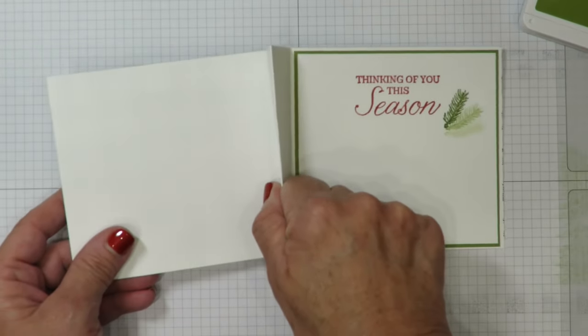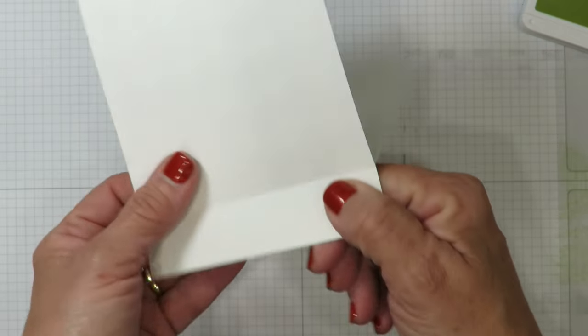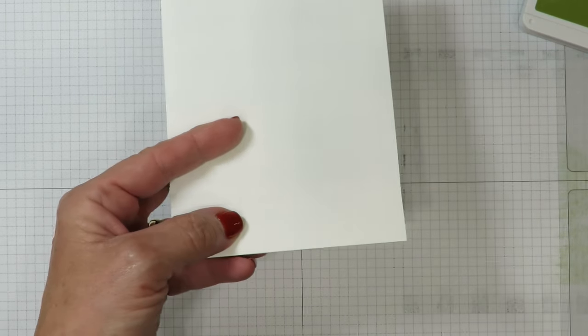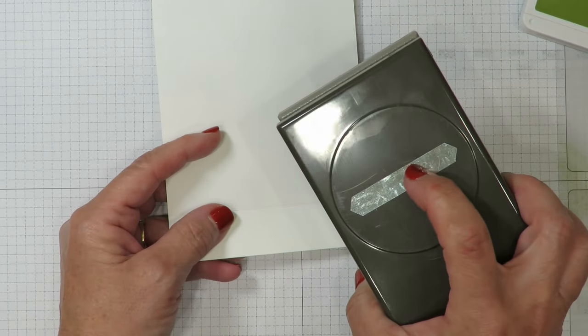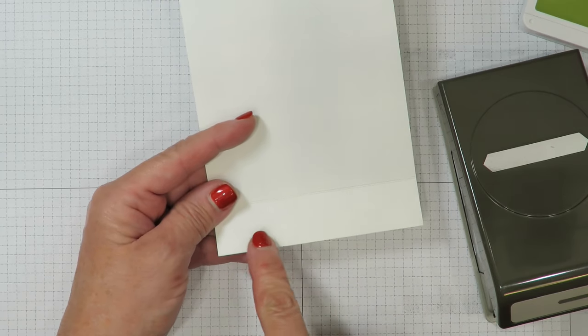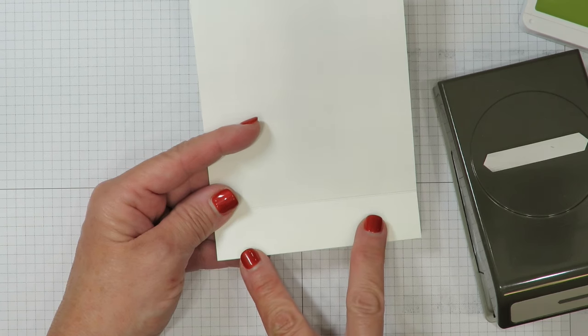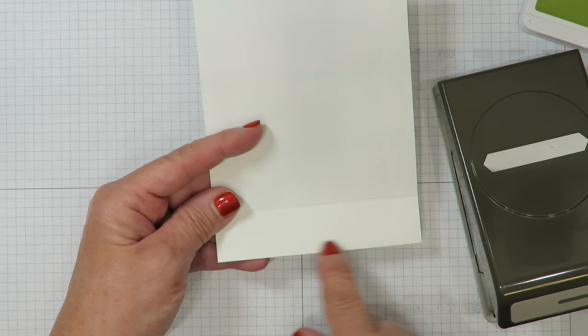Let's create that opening now that we're going to need for our gift card. I'm going to hold this area together. I'm going to fold these areas back. I'm going to be using the classic label punch to help make that opening. I want you to keep in mind that you can use other punches as long as you can repeat the punch and make the opening wide enough. Or you can use a portion of a die.